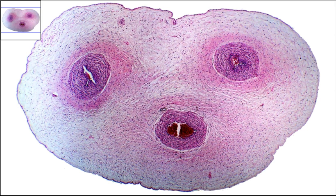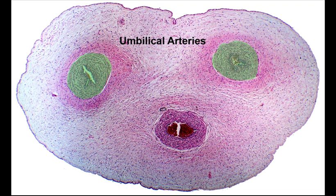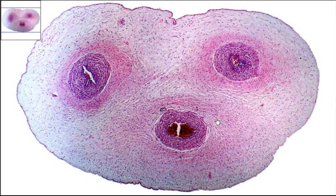What you're looking for are going to be the blood vessels, arteries, and vein, and the mesenchyme. Right up here towards the top of the window you see one and two blood vessels. These are the umbilical arteries. The one which is lower down here is the umbilical vein.